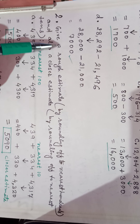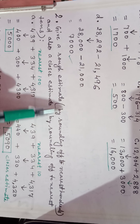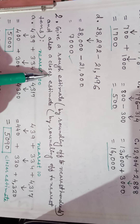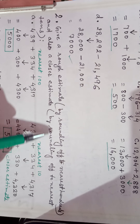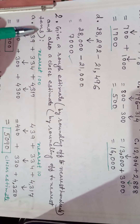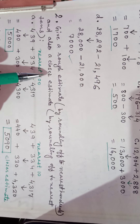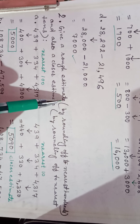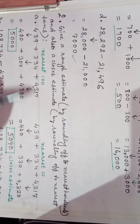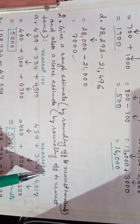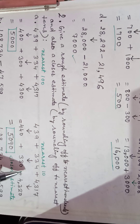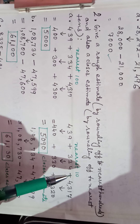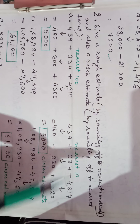Question number 2: Give a rough estimate by rounding off to the nearest 100, and also a closer estimate by rounding off to the nearest 10. Here we have to round to both the nearest 100 and the nearest 10, because rounding to the nearest 10 gives us a closer estimate.